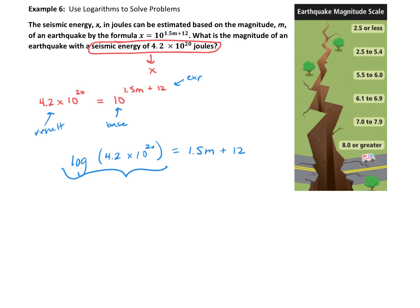So if you type that in, see if you get 20 point, let's see, I'm going to go four numbers after the decimal. 6, 2, 3, 2 equals 1.5M plus 12.